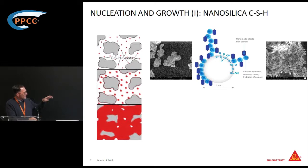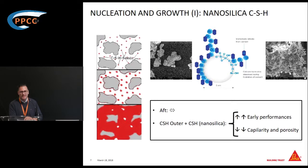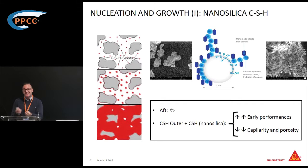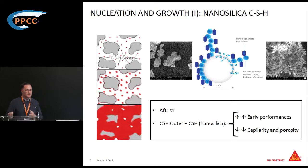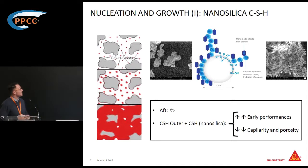To summarize: nanosilica doesn't significantly affect the dissolution, nucleation, or growth of ettringite at the very beginning, but it is quite crucial in the outer CSH it generates. It creates a seeding effect with more nucleation points to promote hydration in the system, leading to clearly better early performance — both mechanically and through reduction of porosity and the capillary network.